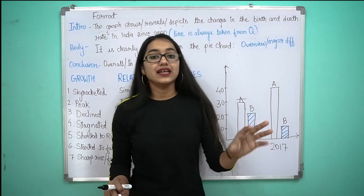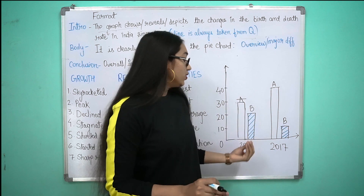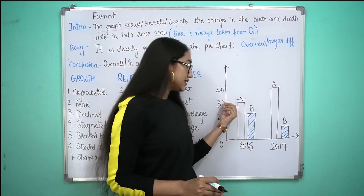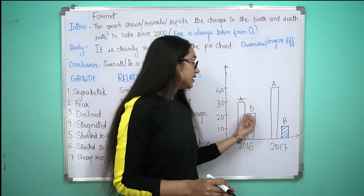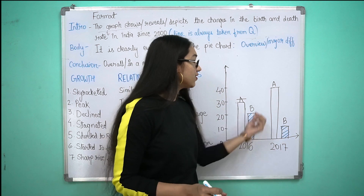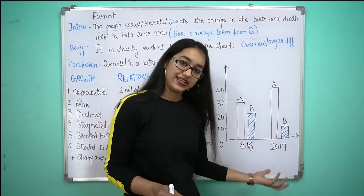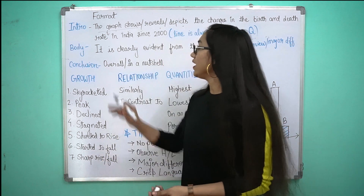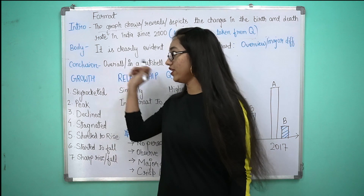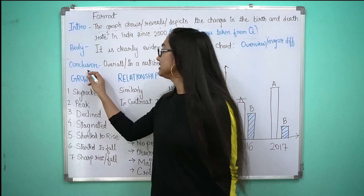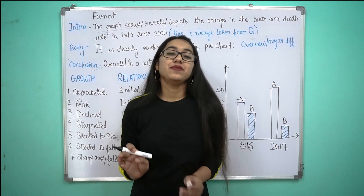उसके बाद आप body में और बताओगे — देखो 2016 में A की sales इतनी थी, B की sales इतनी थी; फिर A की sales next year और बढ़ गई, B की sales next year और गिर गई। ऐसे करके आप पूरे facts clear कर दोगे body में।